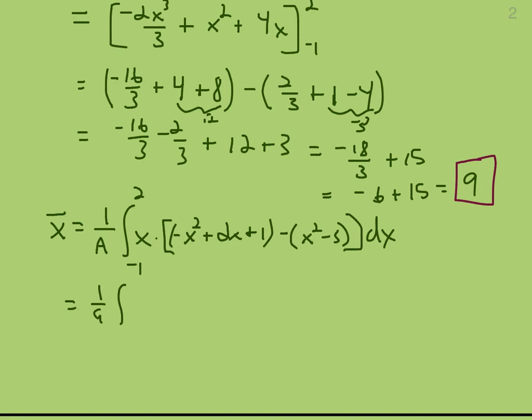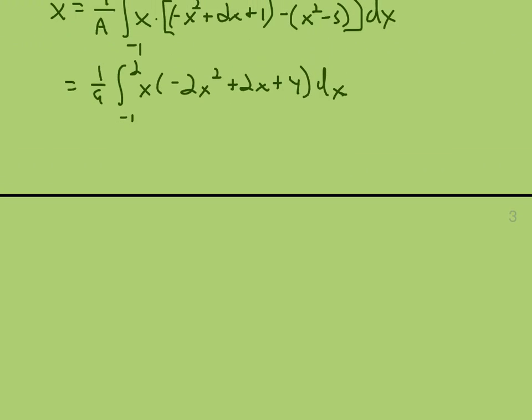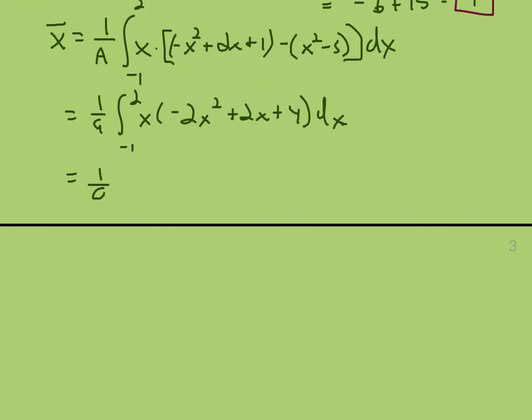That's going to be 1 ninth the integral from negative 1 to 2. We've already subtracted these. We know it's negative 2x squared plus 2x plus 4. So now we just have to put the extra power of x. To give 1 ninth the integral from negative 1 to 2 of negative 2x cubed plus 2x squared plus 4x.